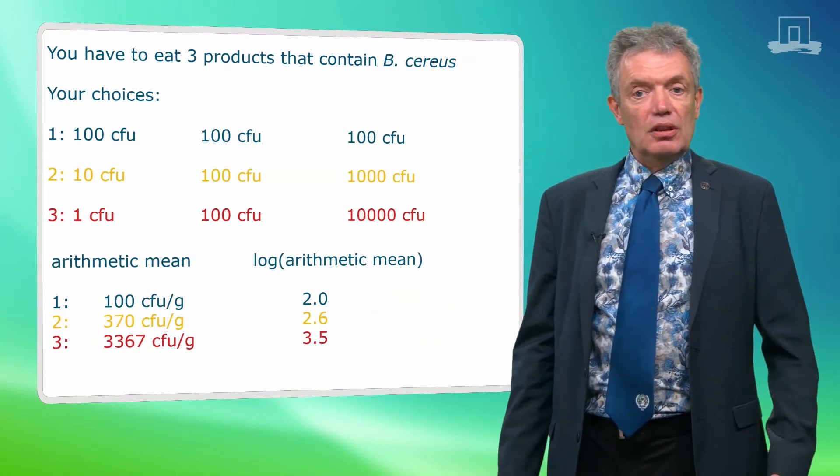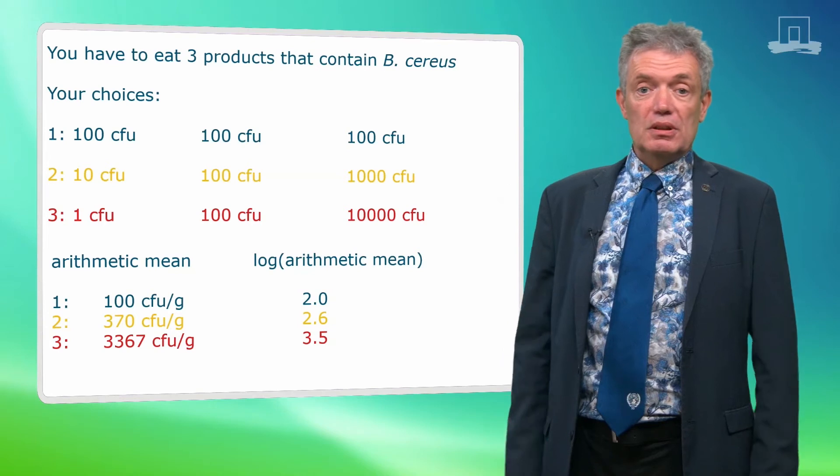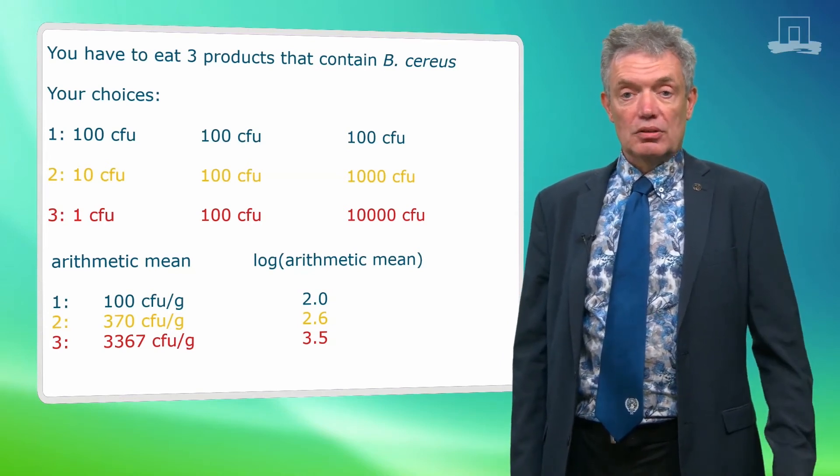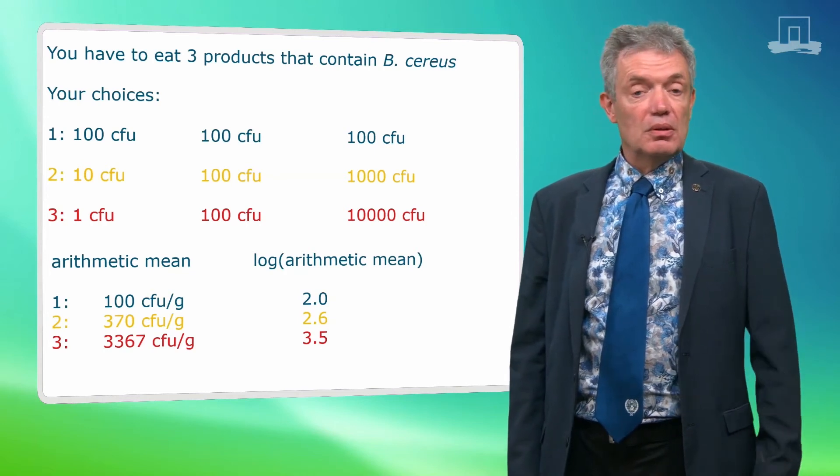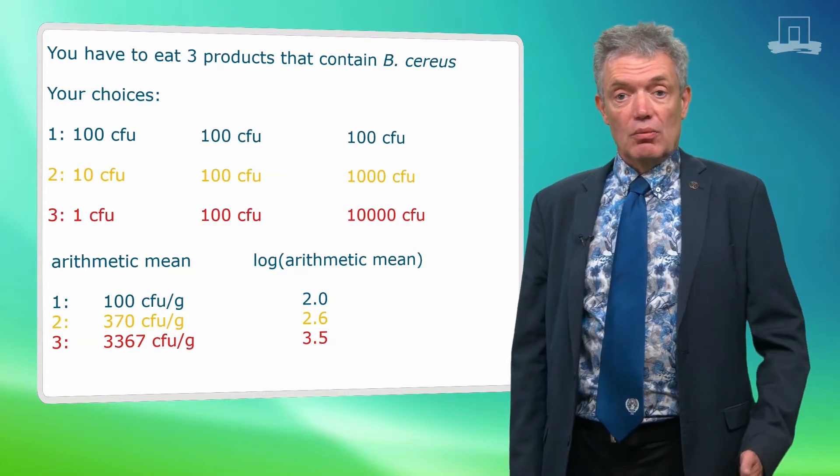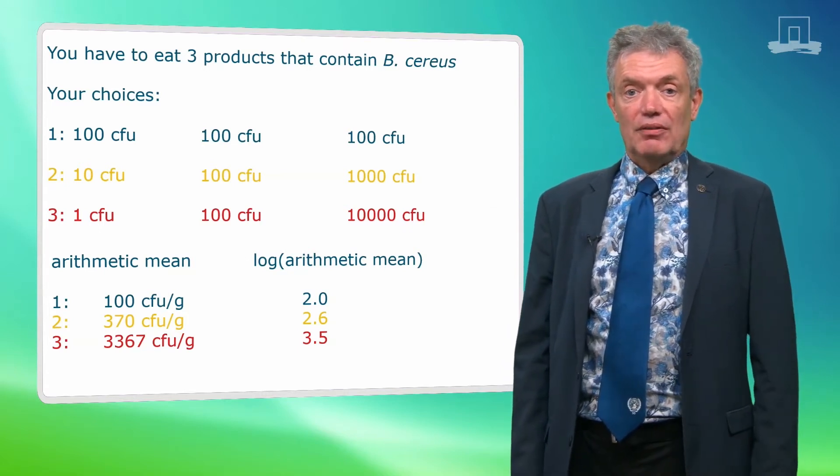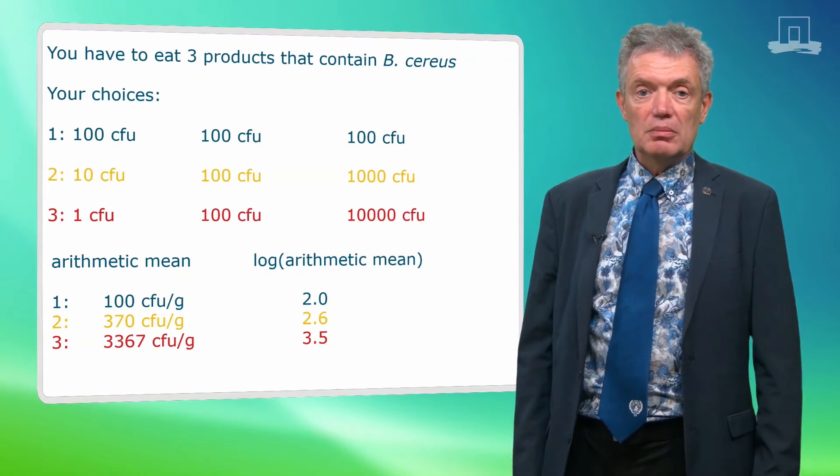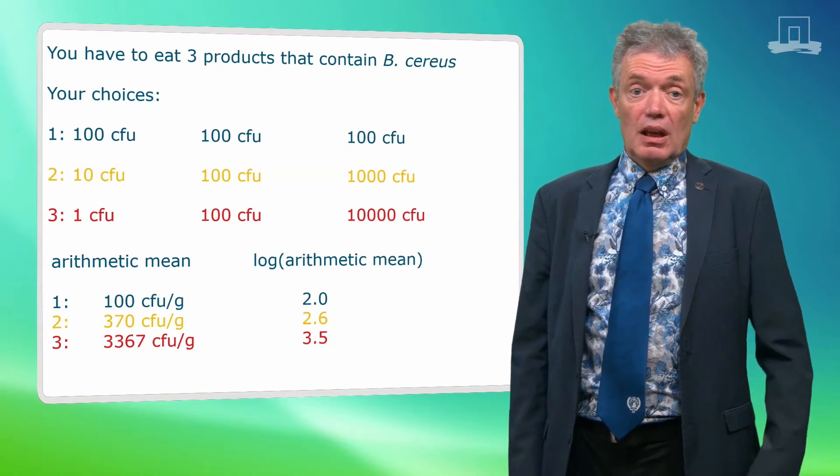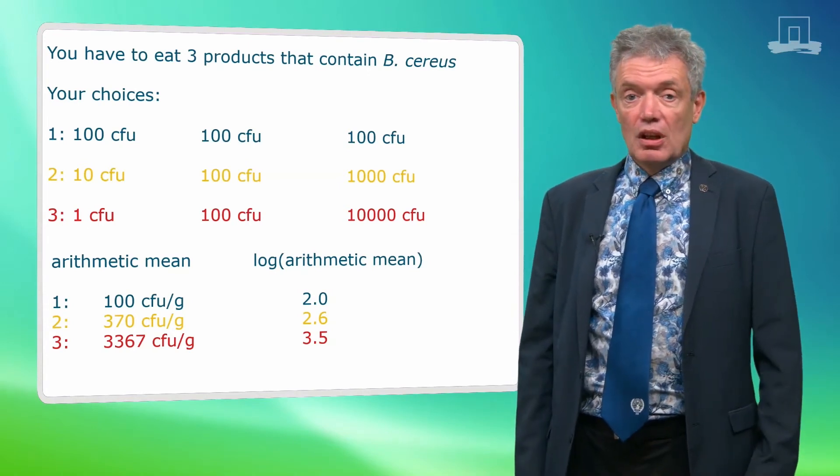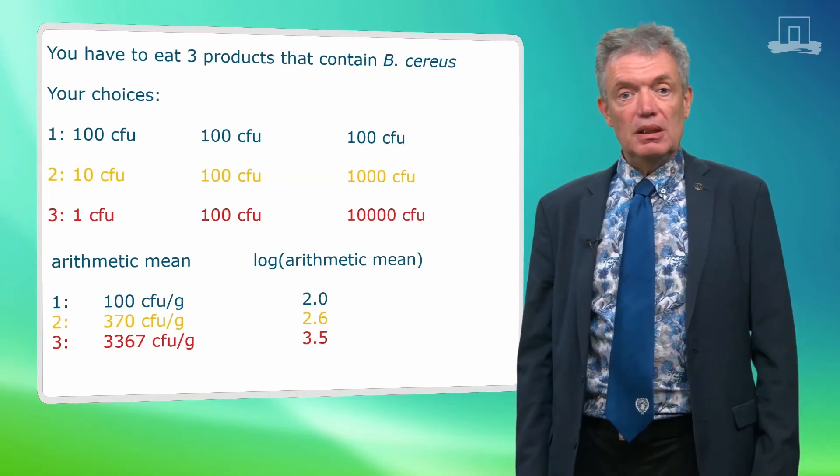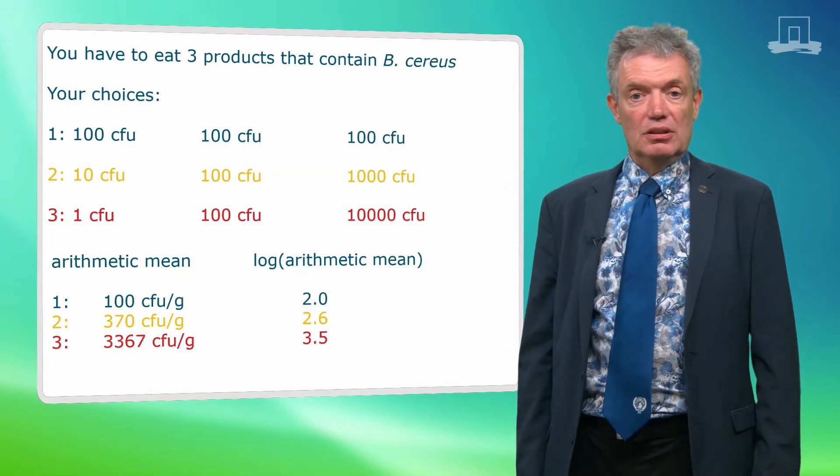Now let's calculate the average on the linear scale. For the first row it's easy, 3 times 100 has as average 100. For the second row we get 1,110 divided by 3, which is 370. And for the third row it's 10,101 divided by 3, which is 3,367. So the arithmetic means are clearly different, as is also the log arithmetic mean, as is also the exposure. The arithmetic mean is therefore a better descriptor for the exposure, while the geometric mean is better for the statistical description of the concentration distribution.